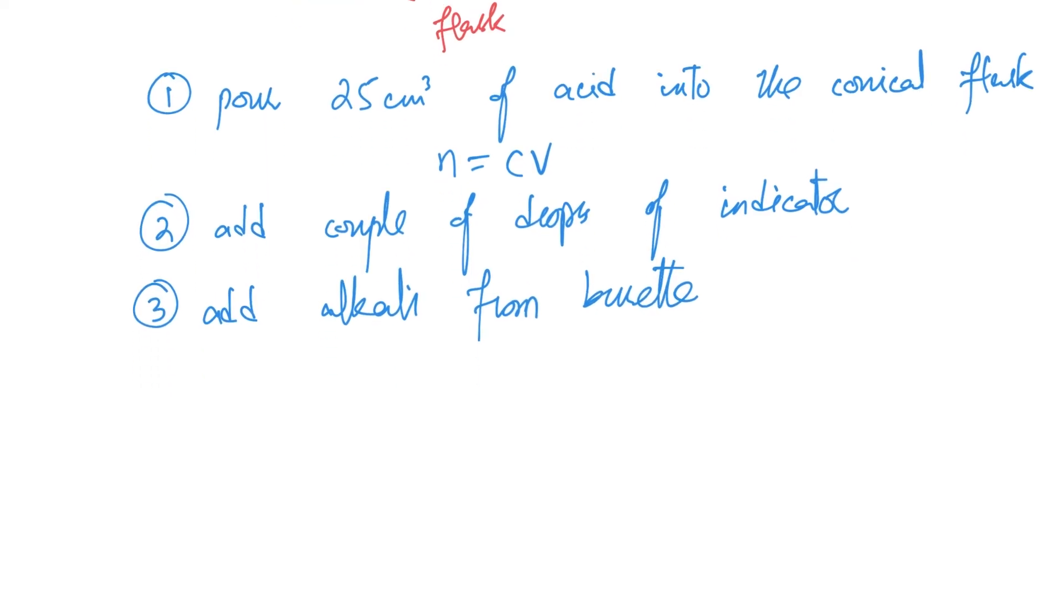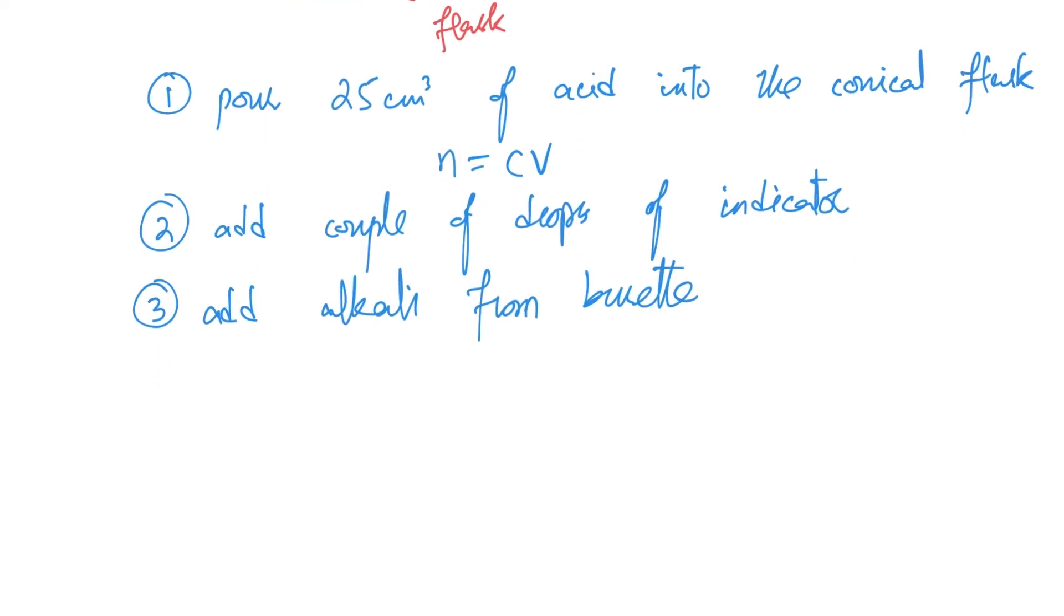But what I do know is that the moment I've added enough, the indicator will change color. The moment I see a change, I stop. So add alkali from the burette until a color change is seen. This color change is telling me that I've added enough. Once I've added enough alkali, the color change will show that you have added enough.